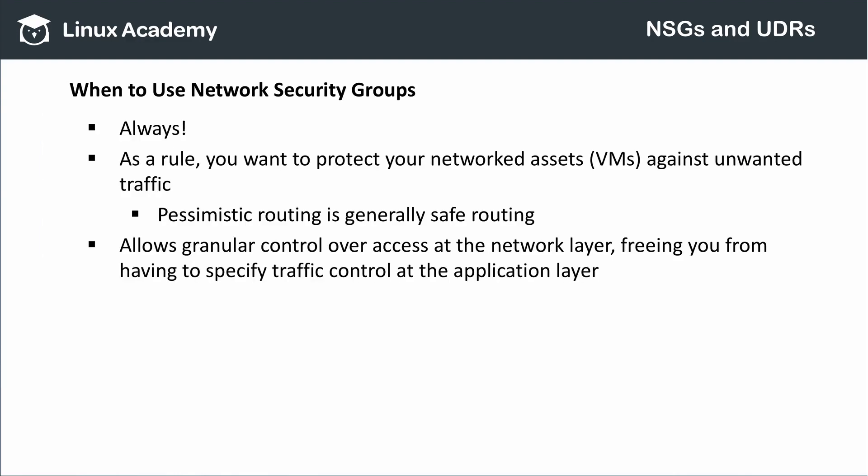When is it appropriate to use network security groups? Pretty much any time you're dealing with a virtual network or a virtual machine. Generally speaking, you want to protect any network service against unwanted or unexpected traffic. Pessimistic routing rules — where traffic that isn't specifically allowed is banned — is usually safe routing. Network security groups also allow very granular control over access at the transport layer, freeing up time you might otherwise spend applying policies within an individual machine's firewall or through other routing tools.